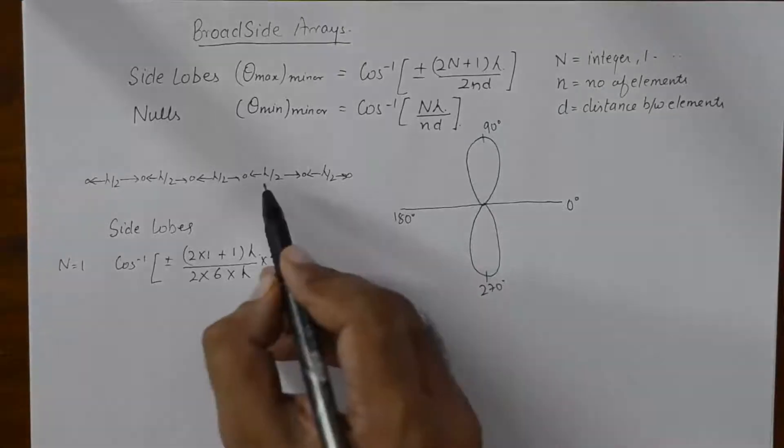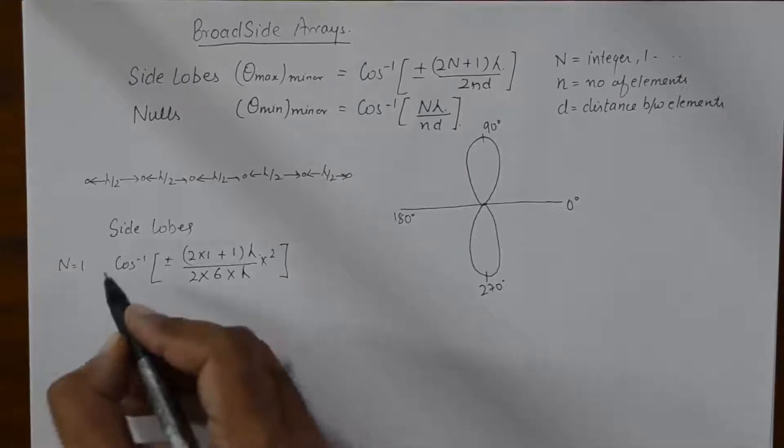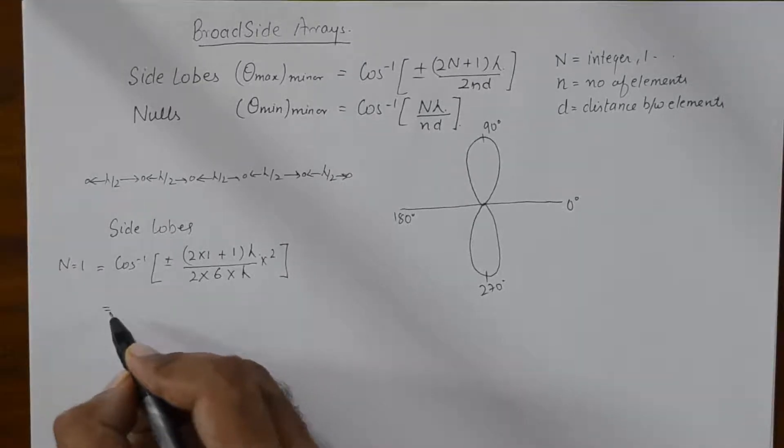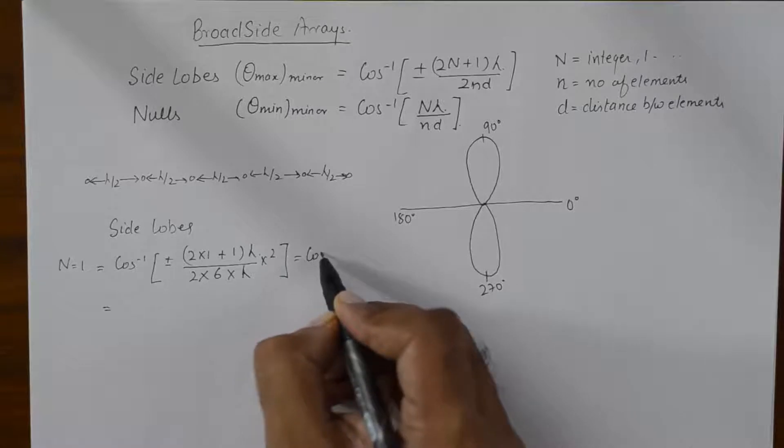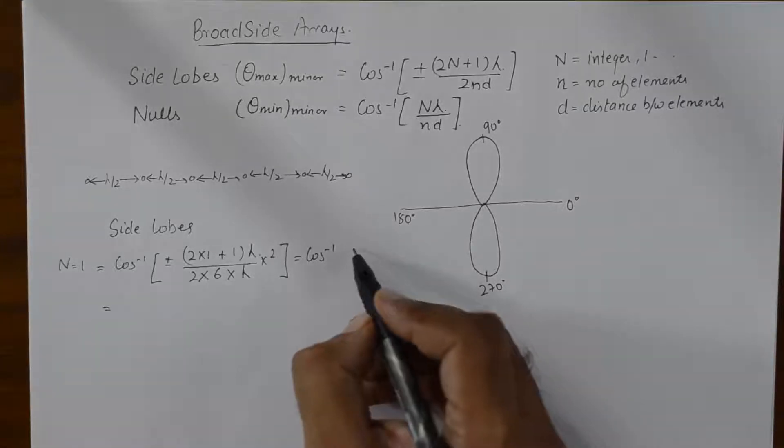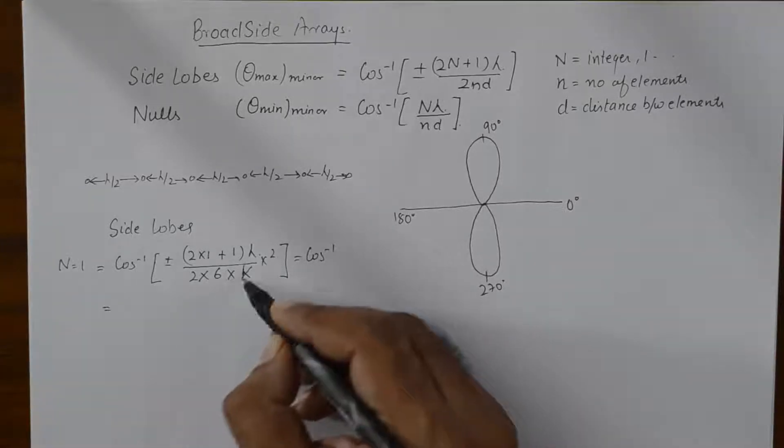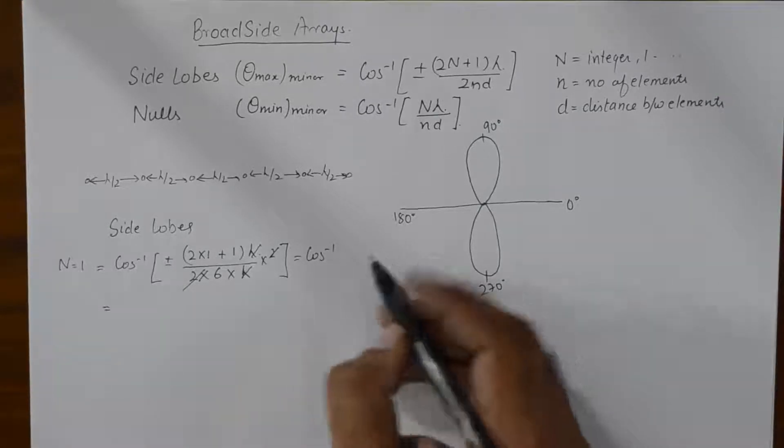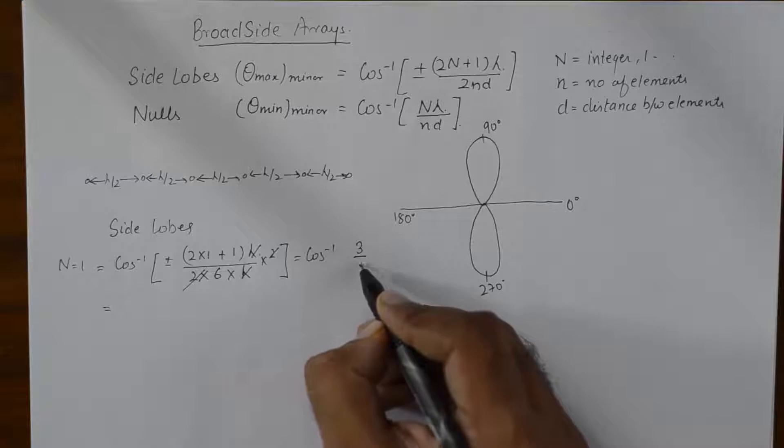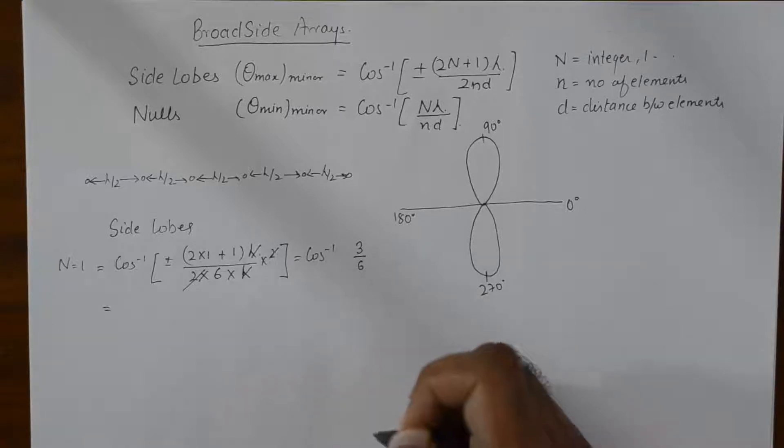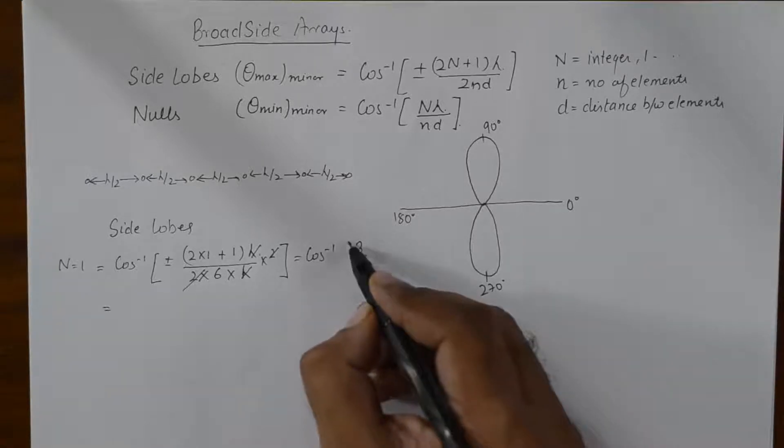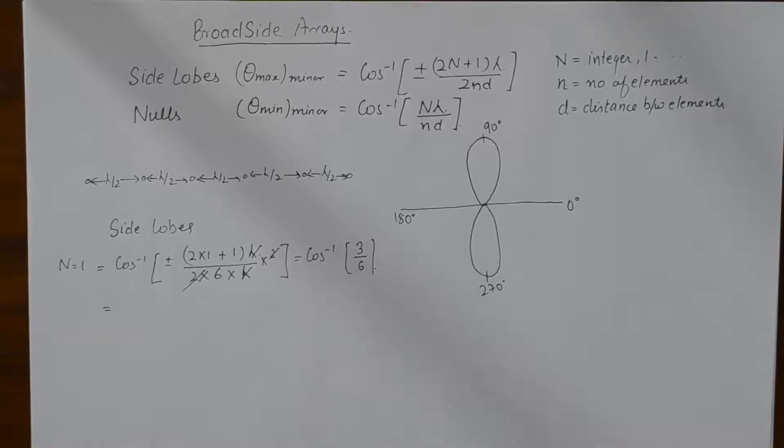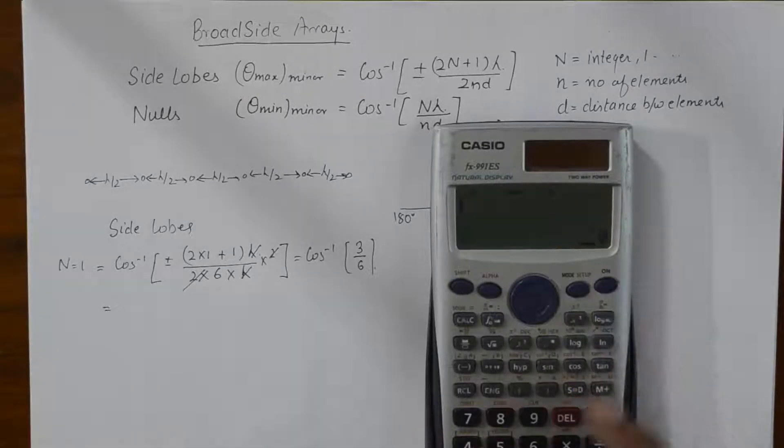So, our first side lobe should come at an angle of, so this becomes 3 by 6 or we could use the calculator now.